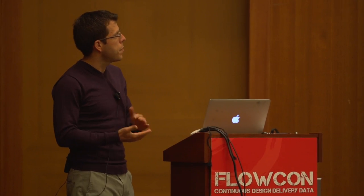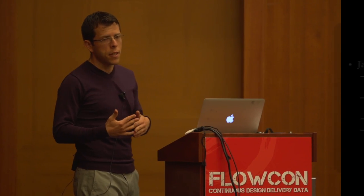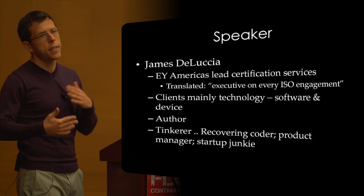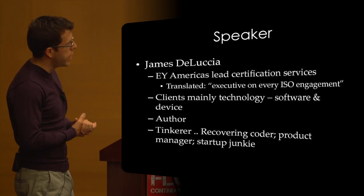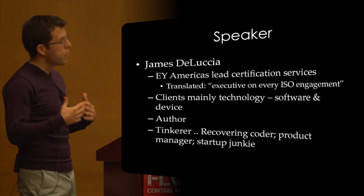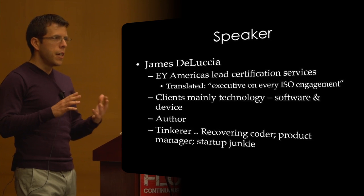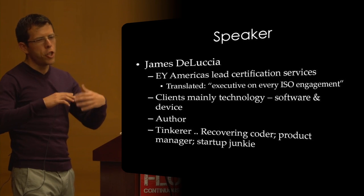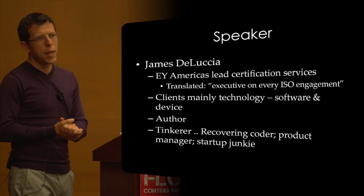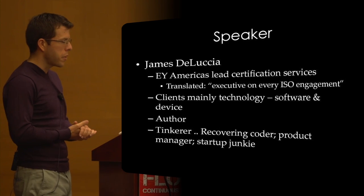Just a little bit about me: my name is James DeLucia, I'm with Ernst & Young, one of the big four accounting firms. I lead our Americas Certification and Compliance Services, so technology companies that have ISO certificates — such as Google and Amazon and Rackspace and those types of organizations — I oversee all that work. It's been interesting to try to adjust our control programs to these technology organizations.